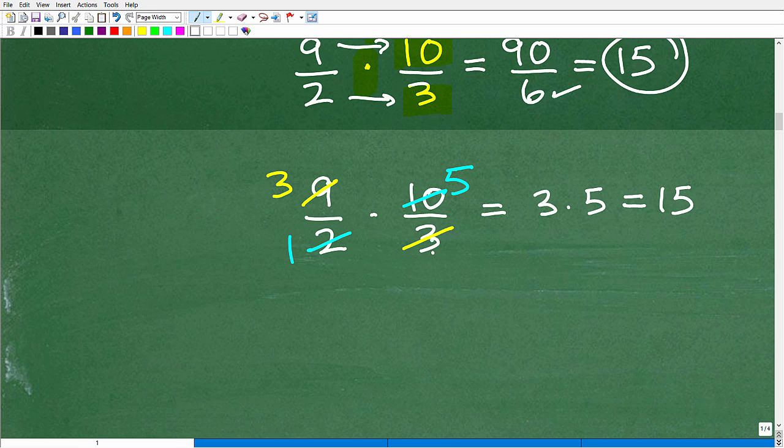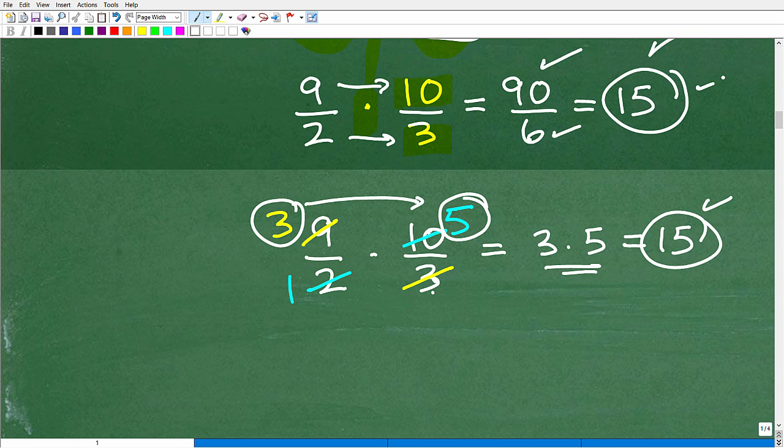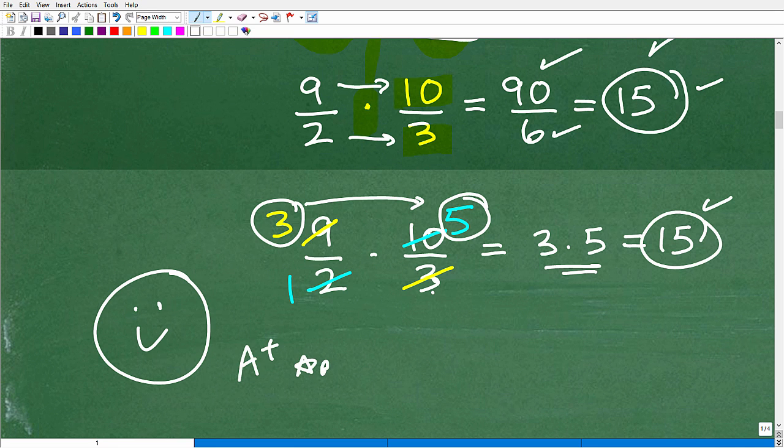or some of you, hopefully remember how to cross-cancel here. So, oh, 3, this 3 goes into 9. 3 goes into 9 three times, and this 2 goes in that 10 five times. So I can go 3 times 5 is 15. So if you saw that, okay, then I must give you another happy face with an A plus, and you get your star. So whether you work with fractions or decimals, if you got this problem right, very good.